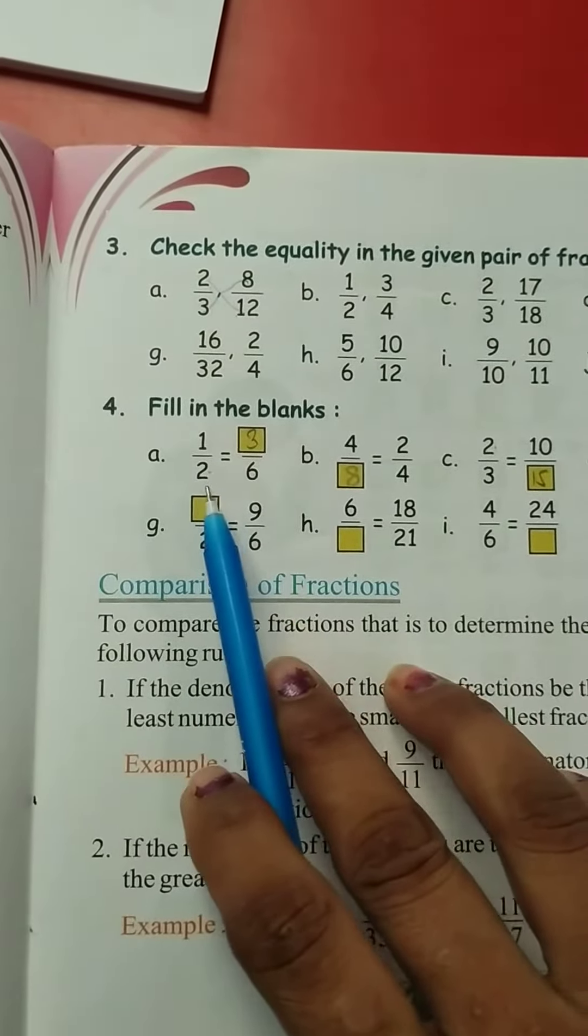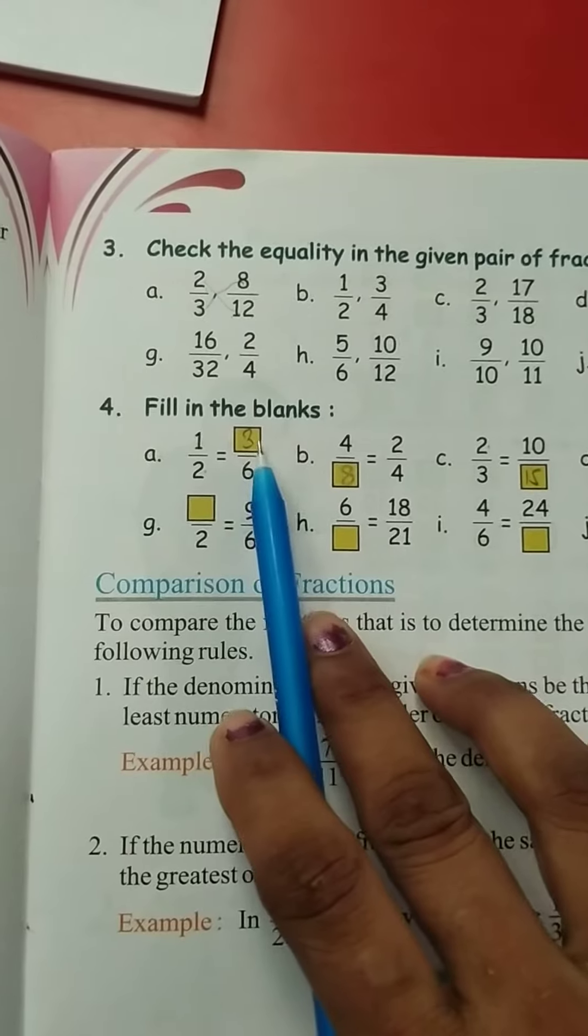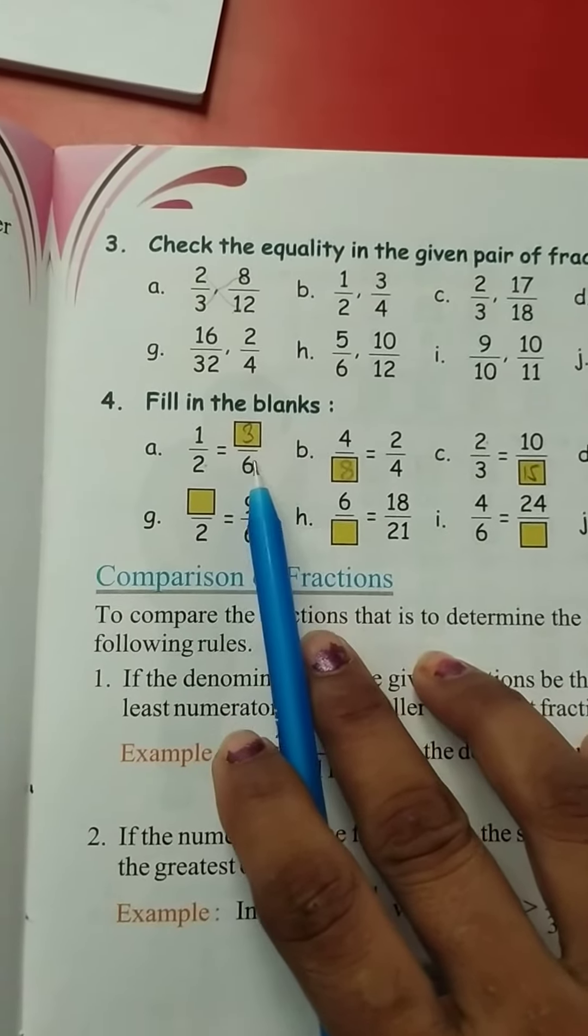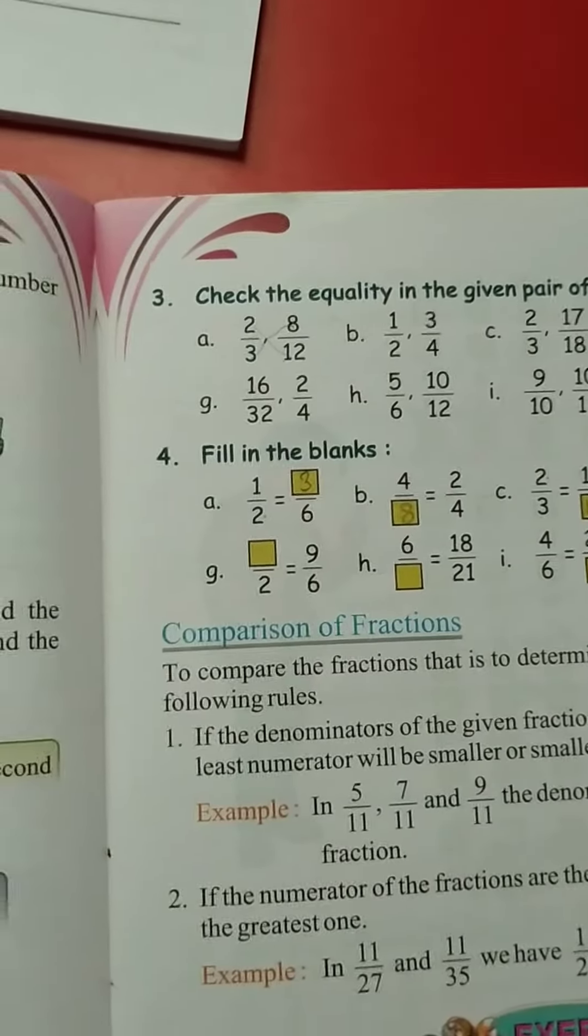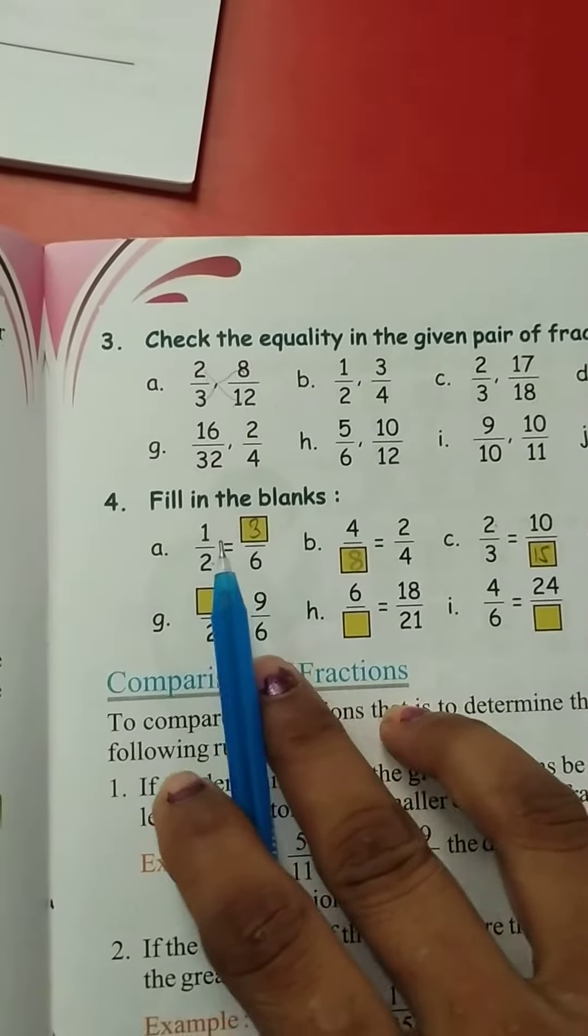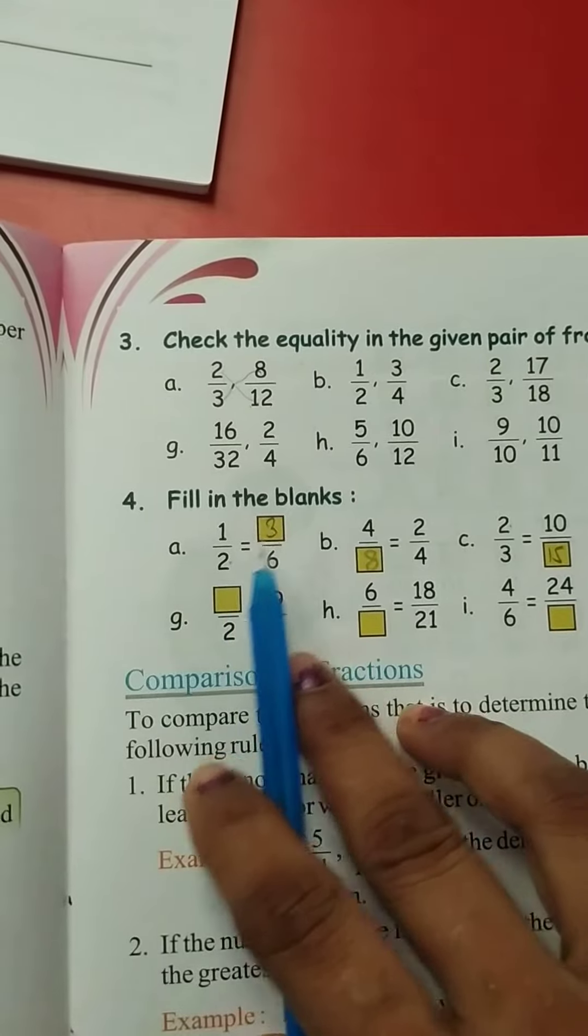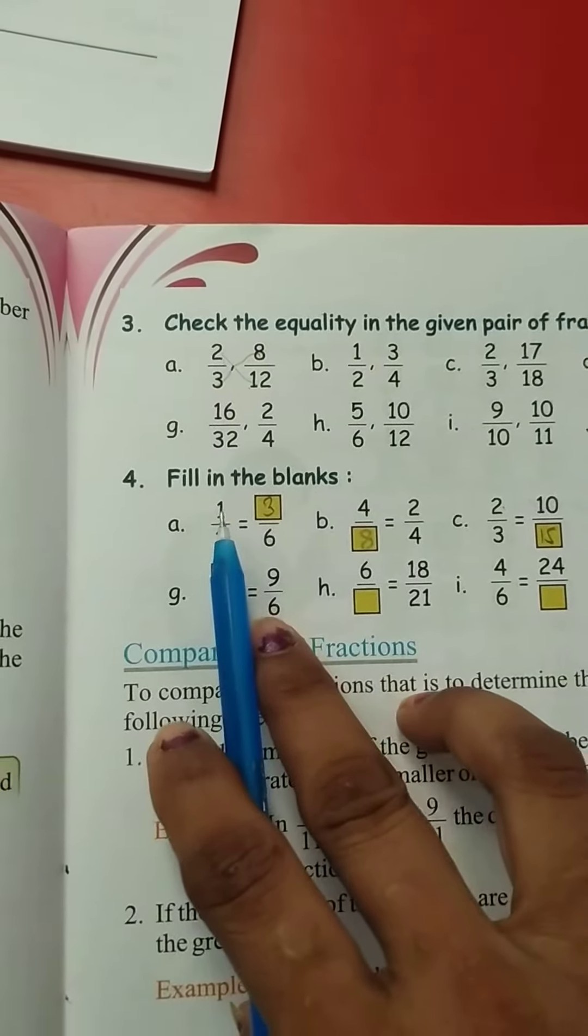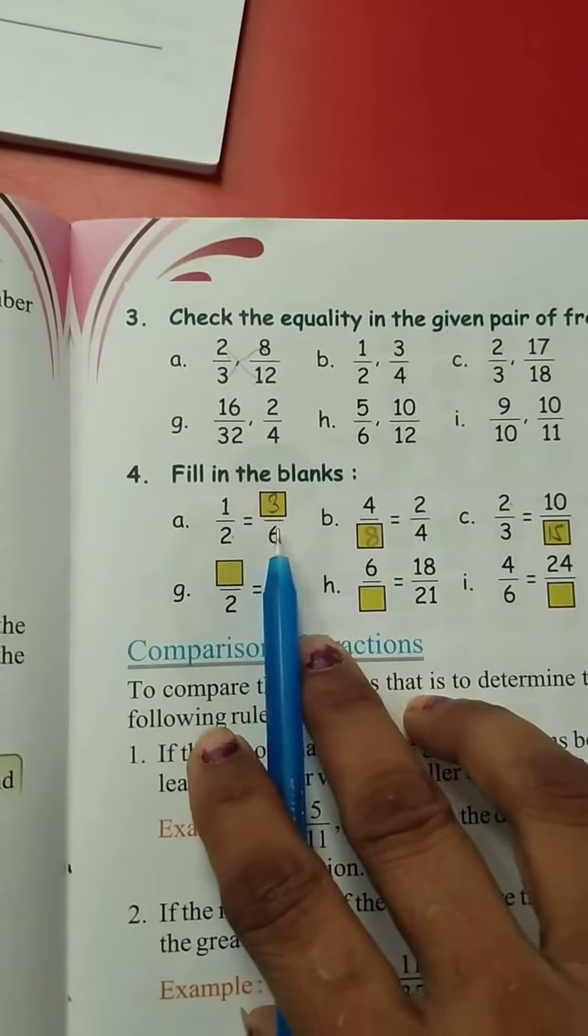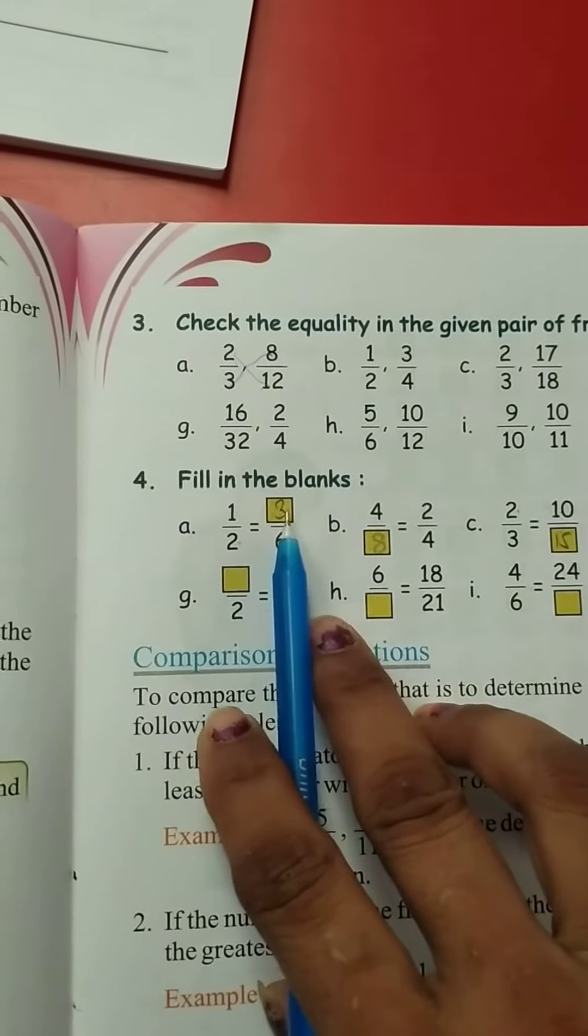Part A: 1 upon 2 equals dash upon 6. Students, what will be done? Cross multiplication. Cross multiplication will be done. So 1 times 6 equals 6, 2 times 3 equals 6. So here in box there will be 3.